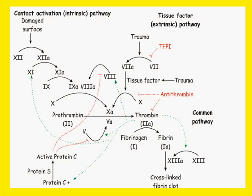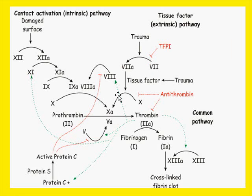As a reminder, coagulation is triggered from both the intrinsic side — going from factor 12 to 11 to 9 to 10 — and the extrinsic side, where tissue factor triggers factor 7 to become 7a, which acts directly on factor 10a. After that, prothrombin converts to thrombin, and fibrinogen converts to fibrin. That's the whole scheme. Important concepts like this bear repeating.